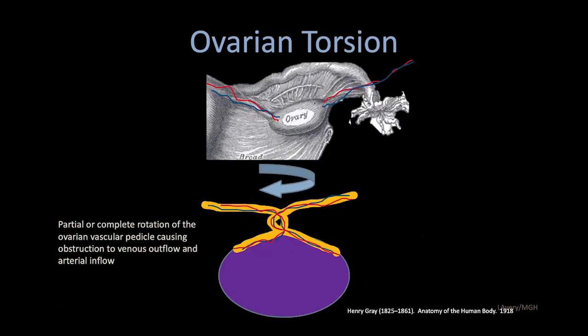Ovarian torsion is oftentimes fairly complex. There's rotation on the vascular pedicle, resulting in both venous and lymphatic outflow obstruction. This results in enlargement of the ovary and ovarian edema, which over time can overcome the higher pressure arterial system and result in arterial inflow issues with necrosis.